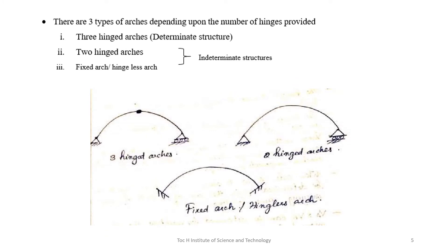There are three types of arches depending on the number of hinges. These are: three-hinged arches, which are statically determinate structures; two-hinged arches; and fixed or hingeless arches — the latter two being statically indeterminate structures. Figures of all three types are shown here.